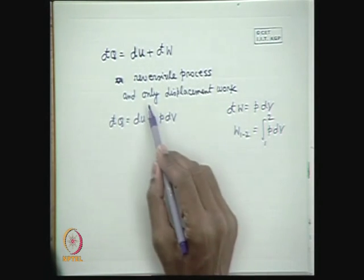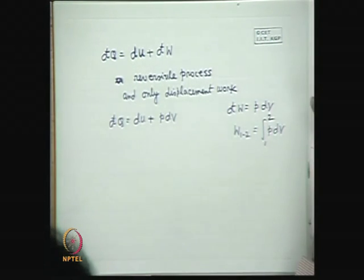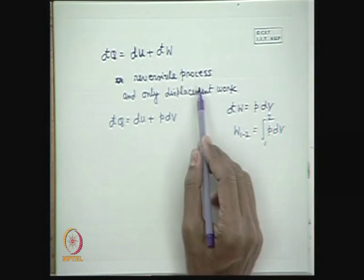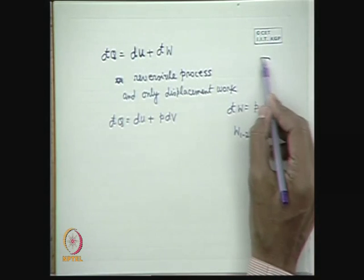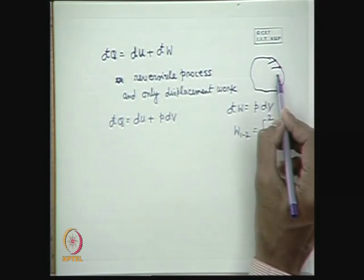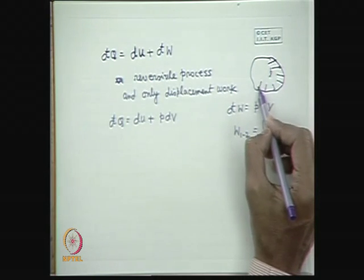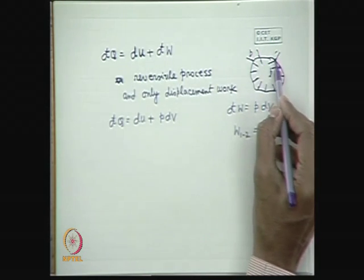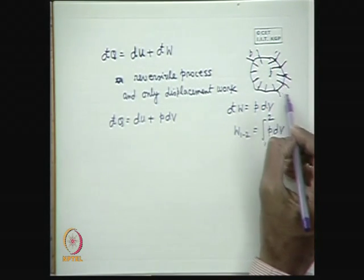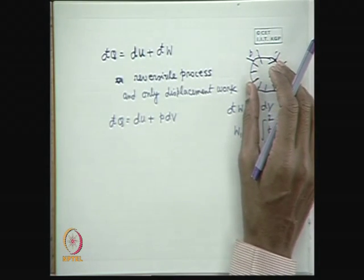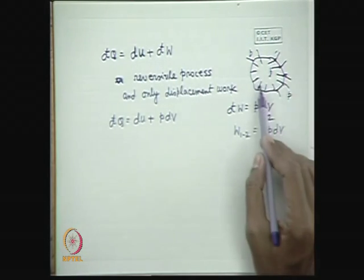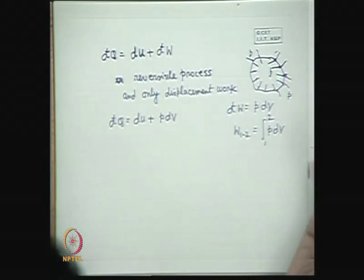For a reversible process with only displacement work, that means the work transfer between the system and the surrounding takes place through the displacement of the system boundary under reversible conditions. There will always be a pressure equilibrium — the pressure exerted at the boundary will be the same uniform pressure p, equal to the pressure of the surrounding. This is a quasi-static process, a very slow process, which is a reversible process where all dissipative effects are absent.